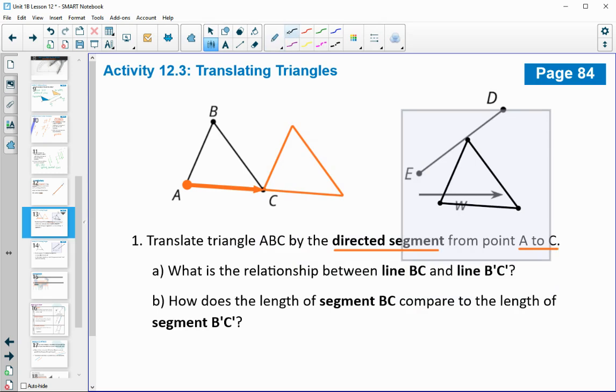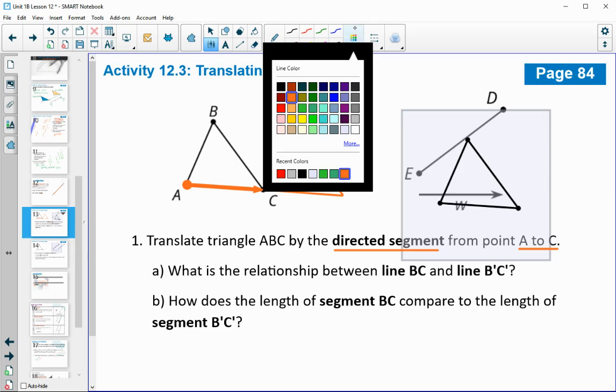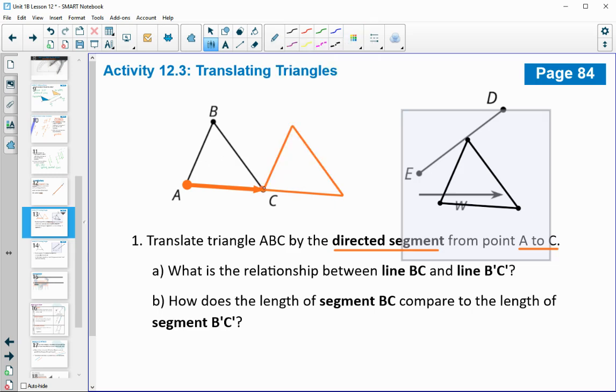And then label the new points. So A moved to here, so this would be A prime. B moved to here, so this would be B prime. And then C moved to here, so this would be C prime.